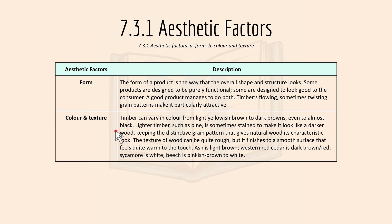For color and texture, timber can vary from light yellowish brown to dark brown, even to almost black. Lighter timber like pine is sometimes stained to make it look like darker wood, while keeping the distinctive grain pattern that gives natural wood its characteristic look. The texture of wood can be quite rough but finishes to a smooth surface that feels quite warm to the touch. For example, ash is light brown and western red cedar is dark brown or red.